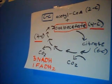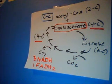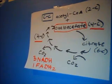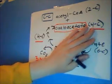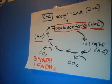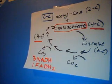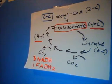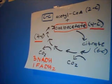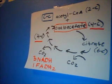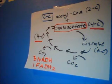Electron carriers like NADH and FADH2. So we start off with Acetyl-CoA and it reacts with oxaloacetate — oxaloacetate is a four-carbon compound. Once it reacts, it generates citrate, a six-carbon compound, or citric acid. And once the citric acid is generated, it goes through seven reaction steps which release two CO2 molecules.